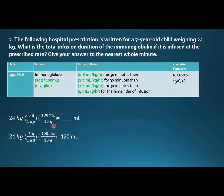Then I need to get rid of grams, so I use 0.5 grams over kilograms. I don't see kilograms in the answer, so I need to get rid of it using 24 kilograms. We cross out diagonally: cancel kilograms, cancel grams, and we're left with mls. The total infusion will be 120mls — a nice number to work with.